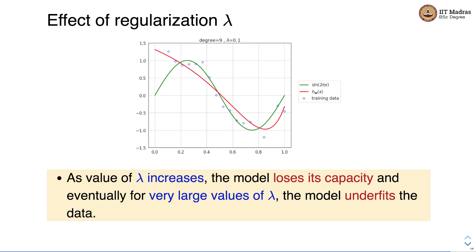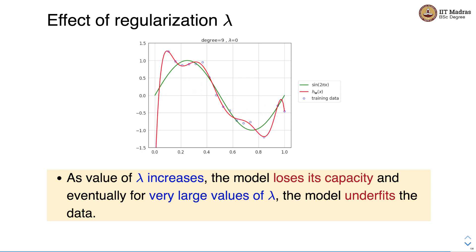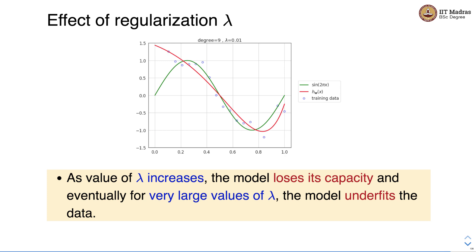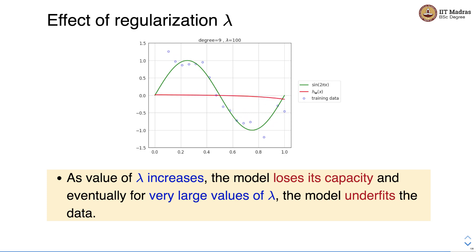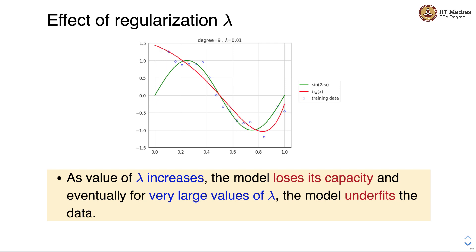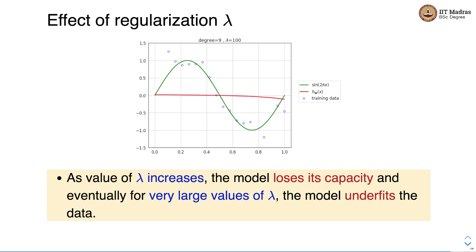We do not want to use too small or too large a value of lambda as a regularization rate — we need to strike a balance between the two extremes of underfitting and overfitting. We started using regularization to address overfitting, but if we add too much regularization, there is a risk of the model underfitting the data. So let us figure out how to choose the regularization rate lambda.